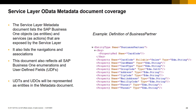The metadata document also reflects all the SAP Business One enumerations and user-defined fields. User-defined tables and user-defined objects available in your company database are represented as entities. As an example, we can see a screen capture with the definition of the SAP Business One object containing the set of SAP Business Partner properties, as well as a pointer to the key property for the SAP Business One object.